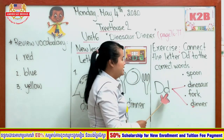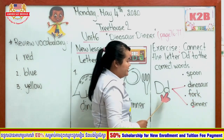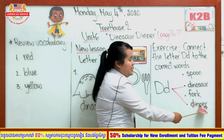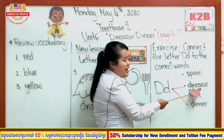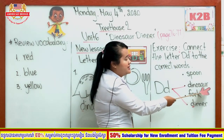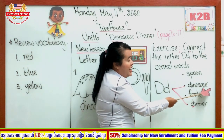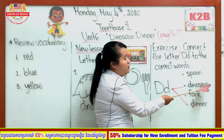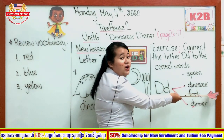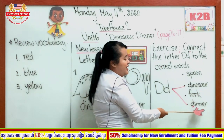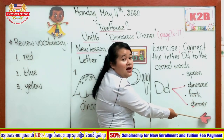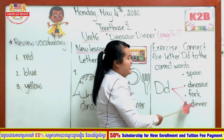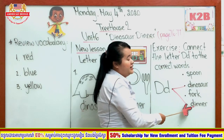Let's repeat after me: D — Dinosaur — D-I-N-O-S-A-U-R — Dinosaur. Dinner — D-I-N-N-E-R — Dinner. Don't forget to read it again and again: Dinosaur, Dinner.